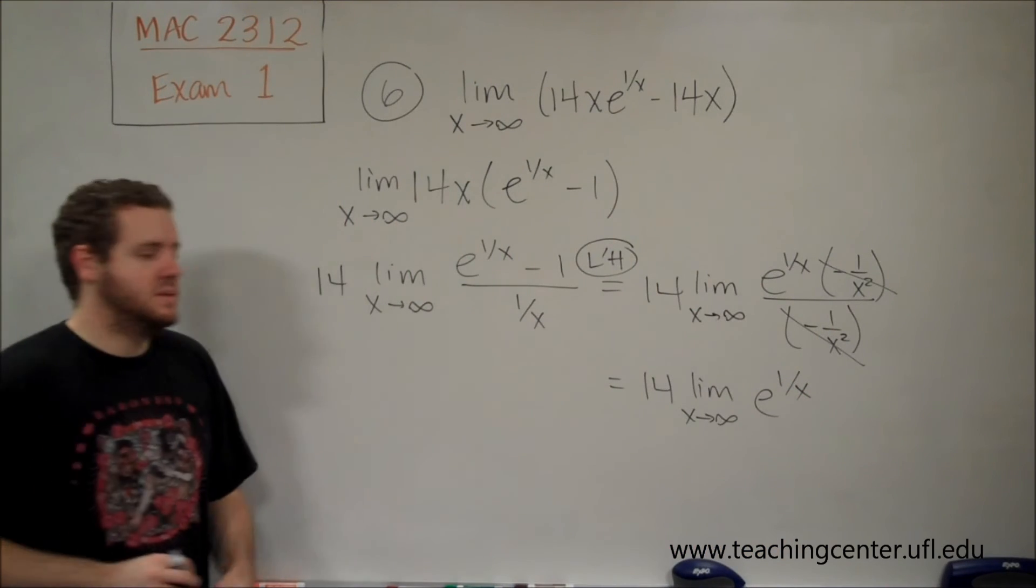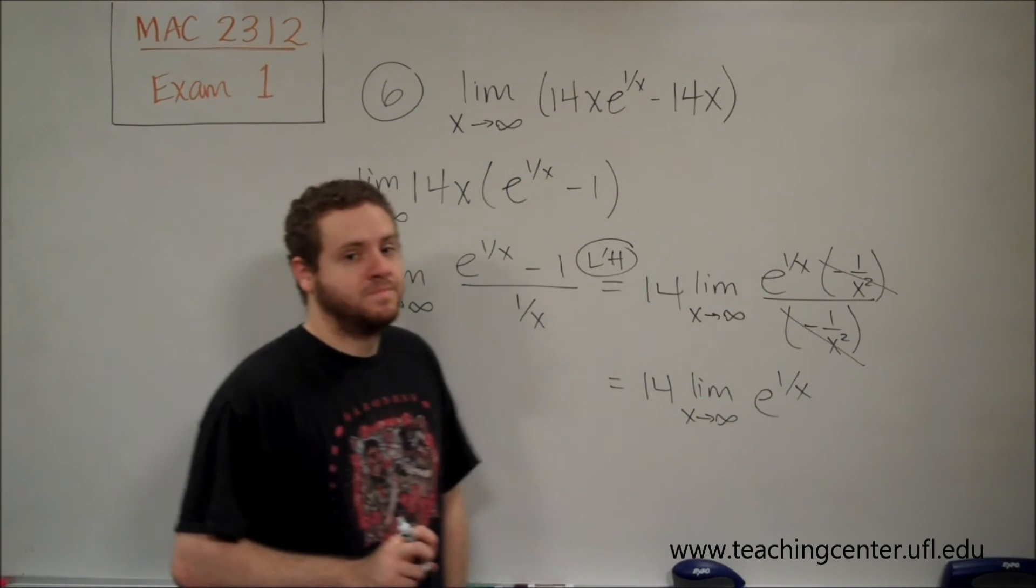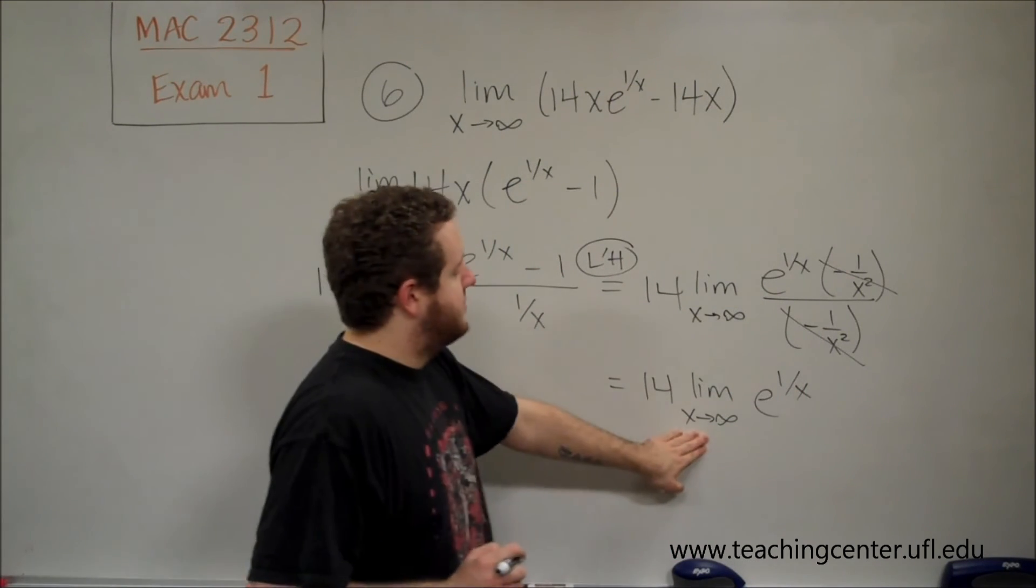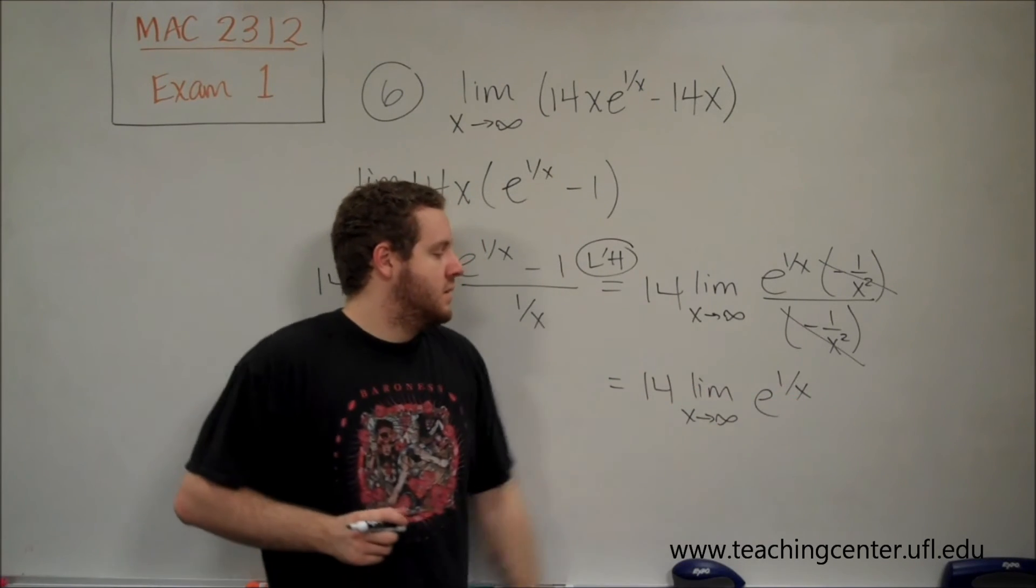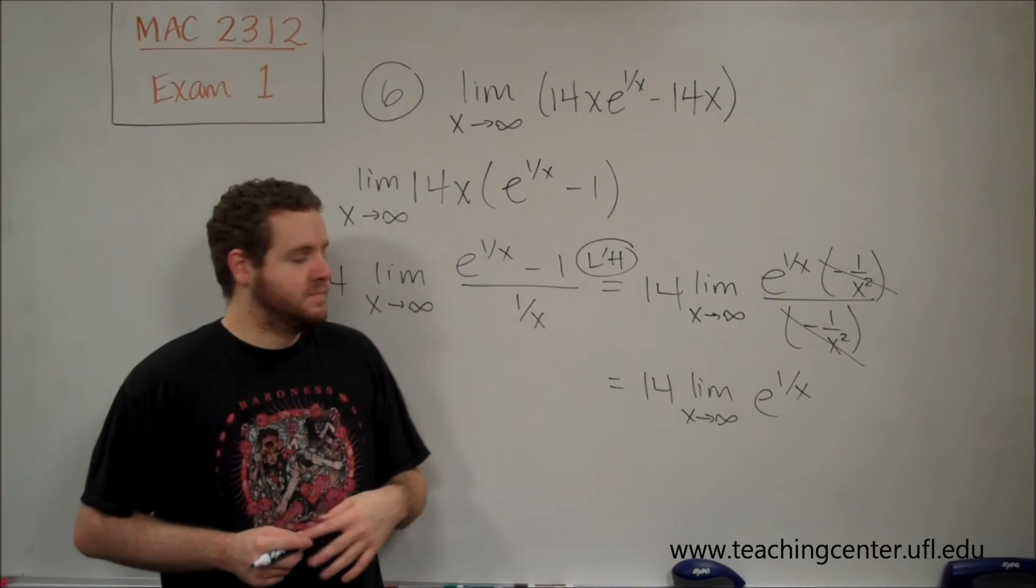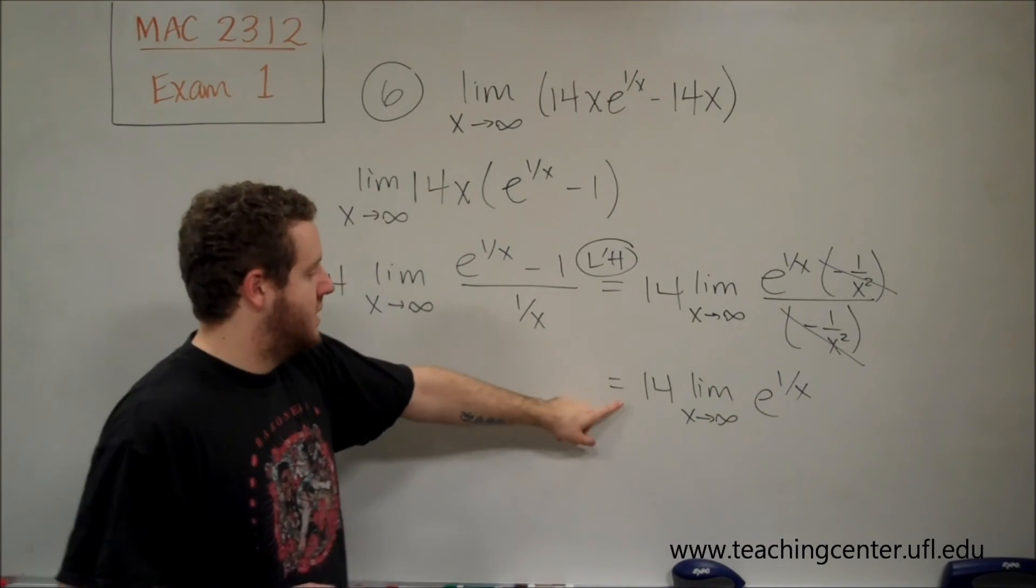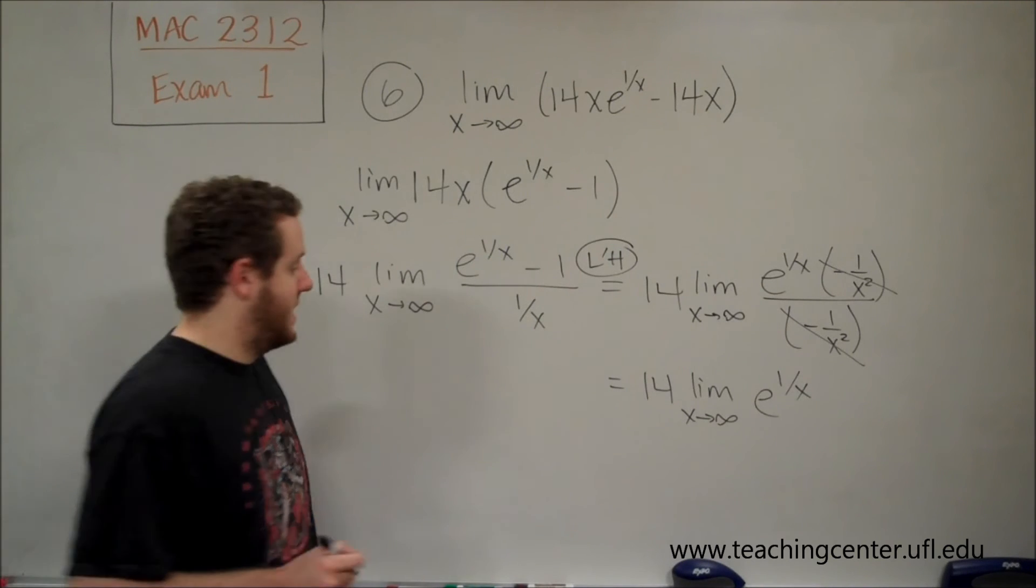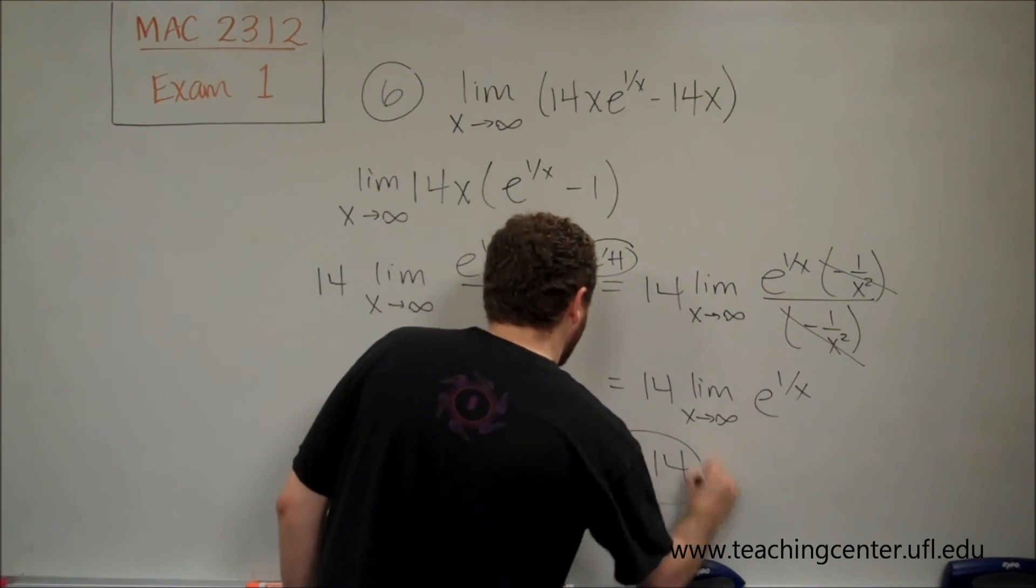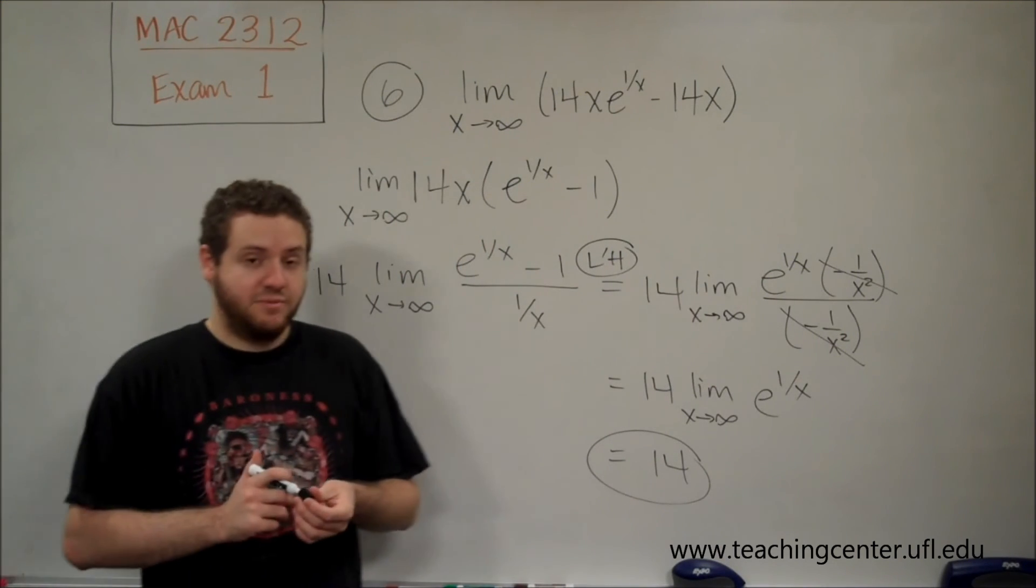That becomes the limit as x goes to infinity of e^(1/x). That's not indeterminate. We can figure that out. As x goes to infinity, the exponent goes to 0 because we get 1 over a number tending to infinity. e^0 is 1. So this limit is 1 times the 14 we had put outside in the first place. Our resulting limit is 14.